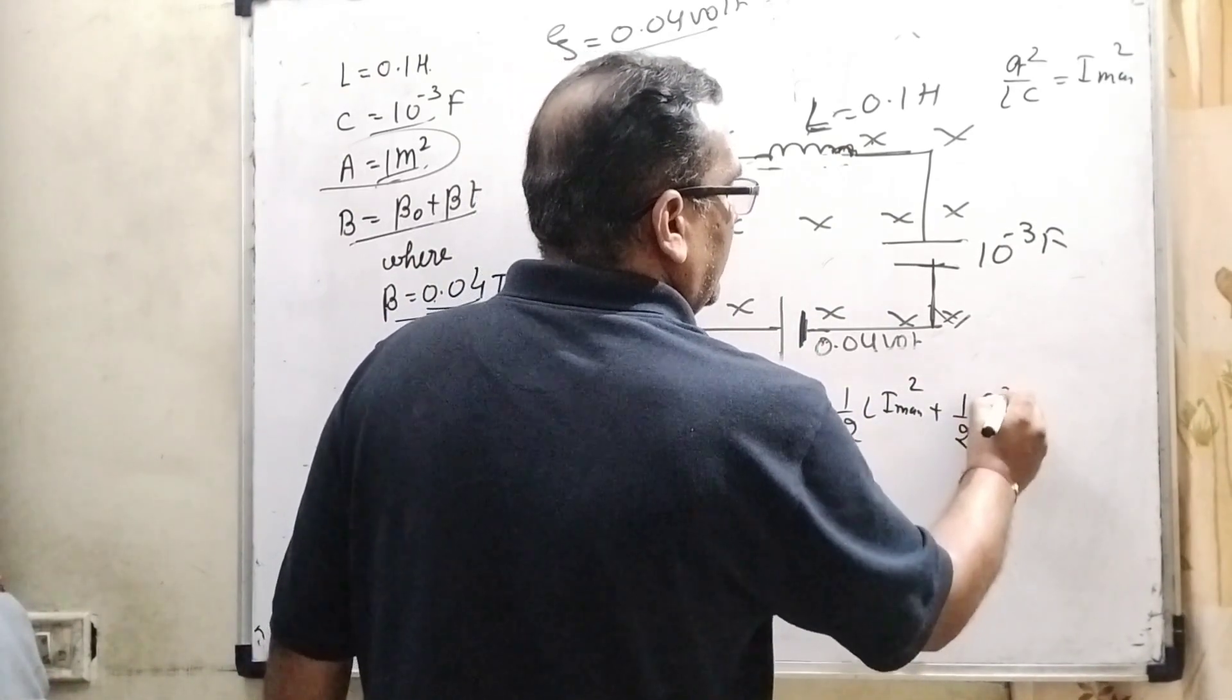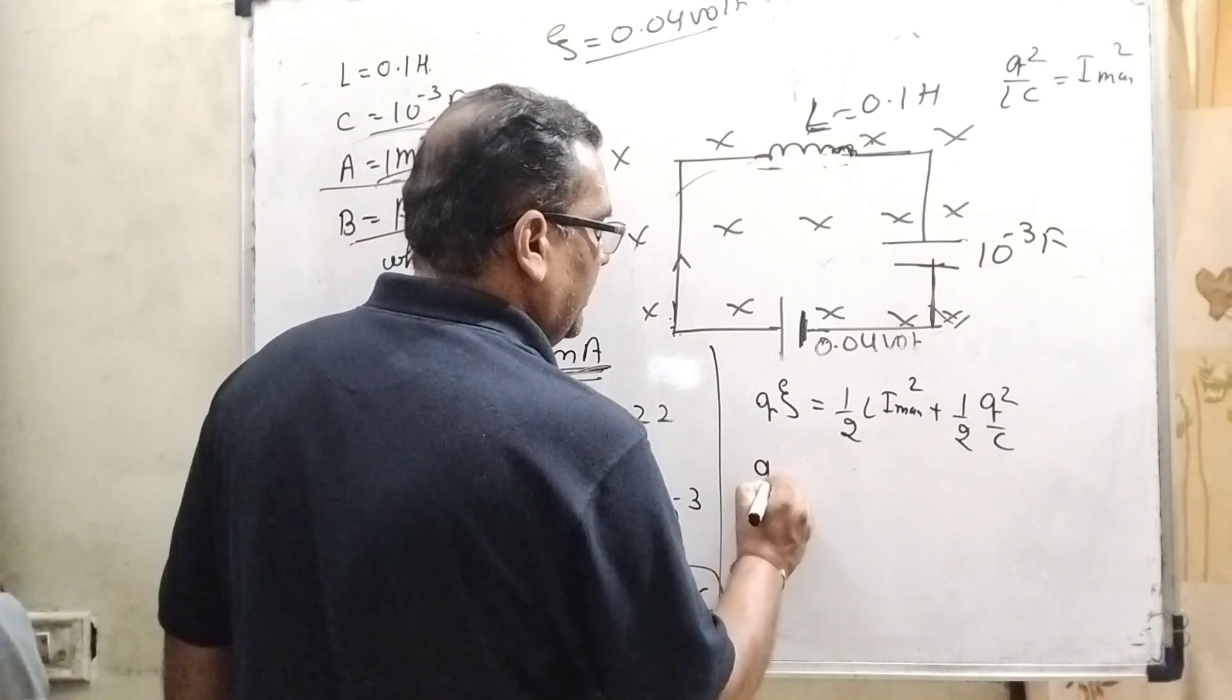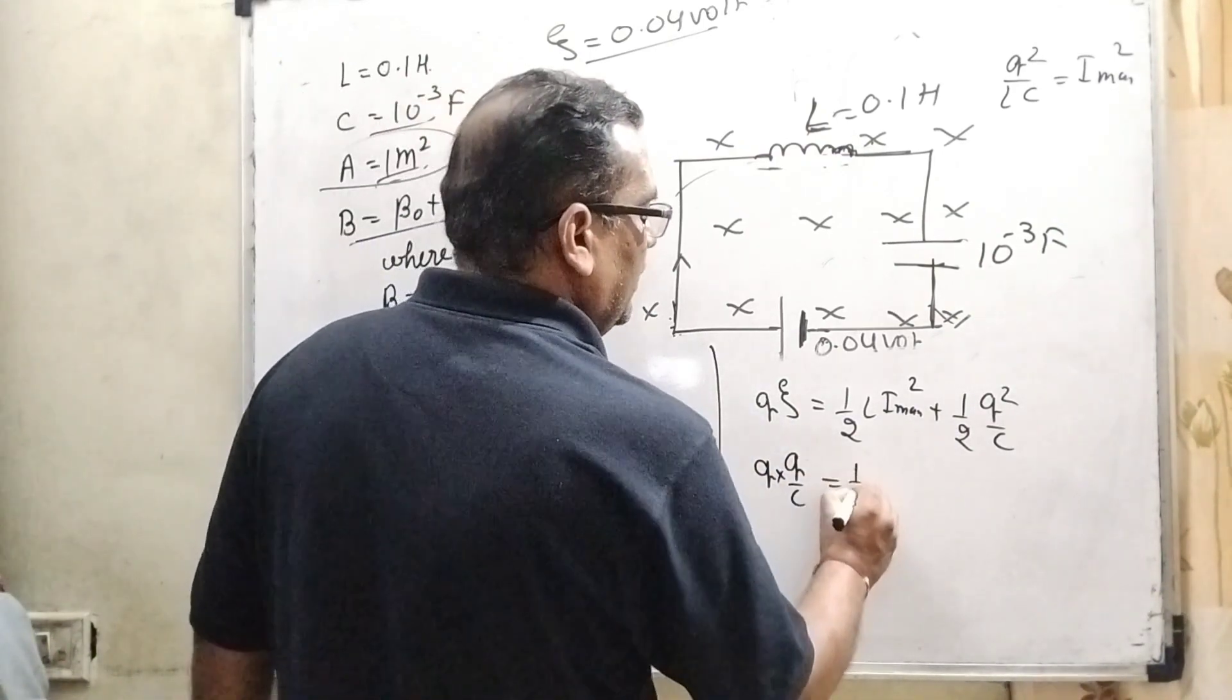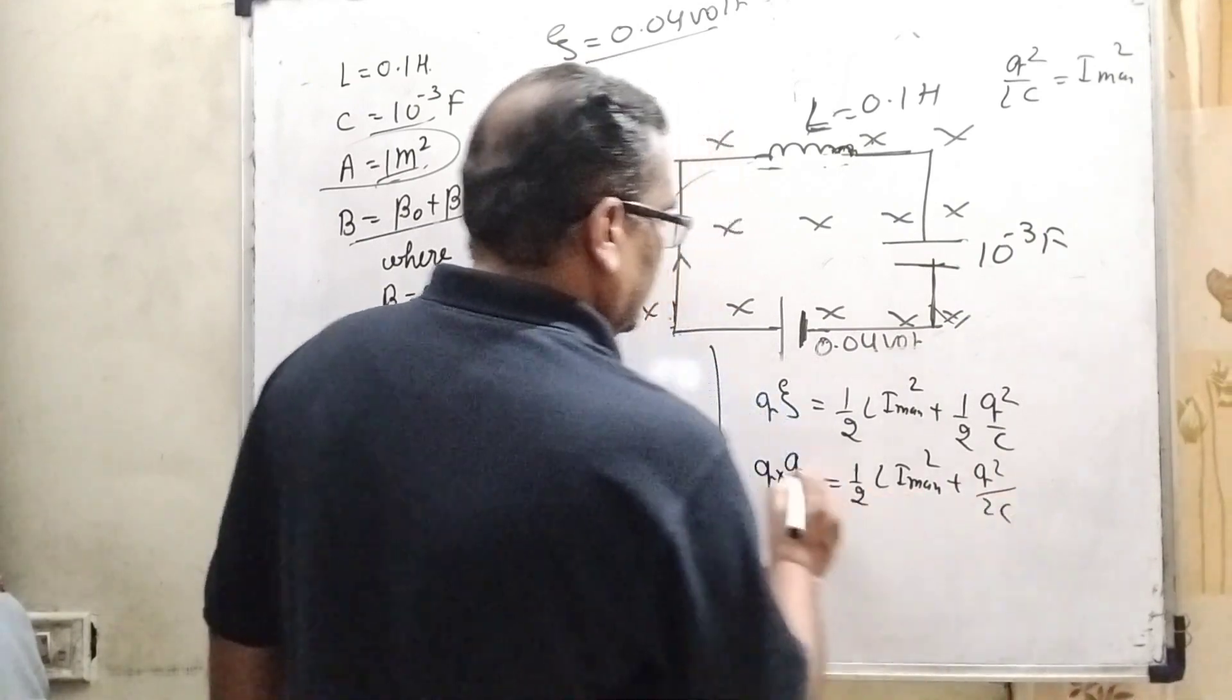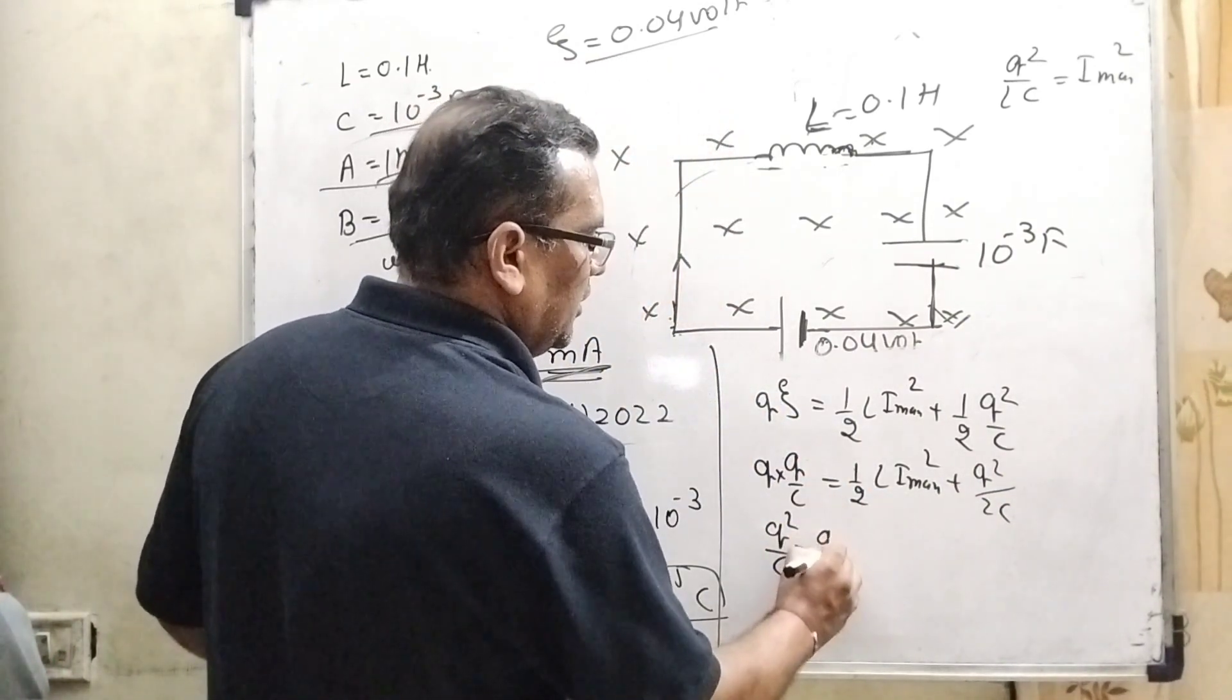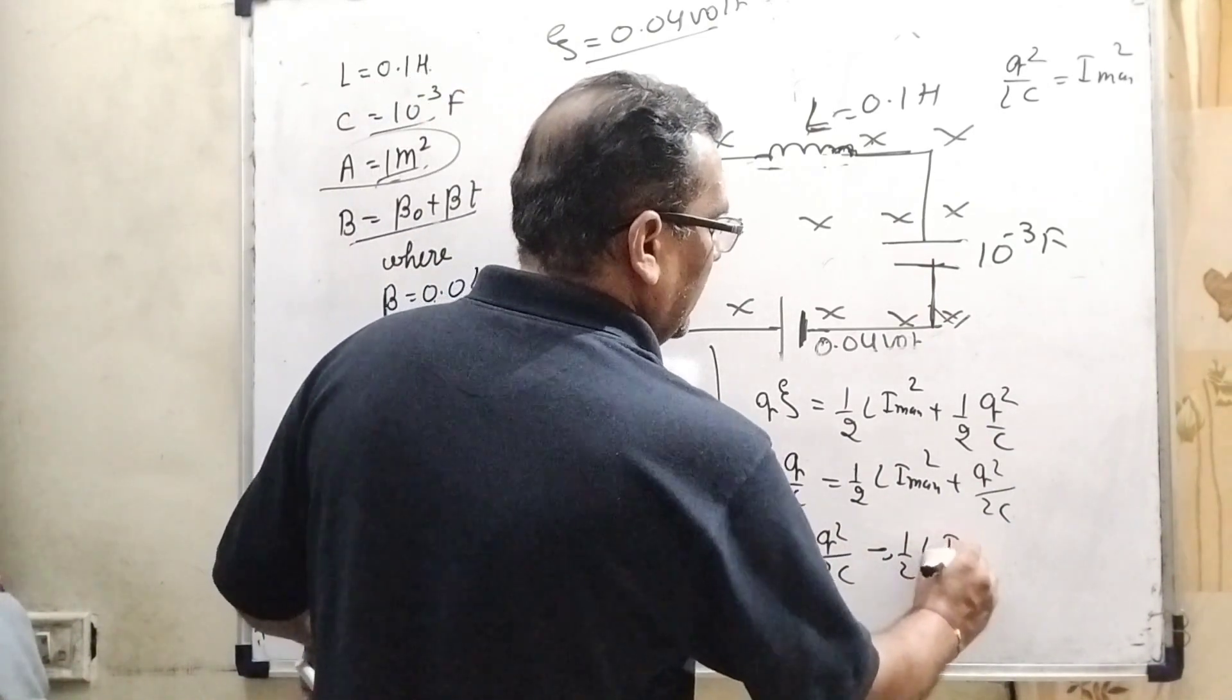Here for our convenience, EMF can be written as Q by C equal to 1 by 2 L I maximum square plus Q square by 2 C. It becomes Q square by C equals Q square by 2 C plus 1 by 2 L I maximum. Transposing this term, Q square by 2 C minus 1 by 2 L I maximum.